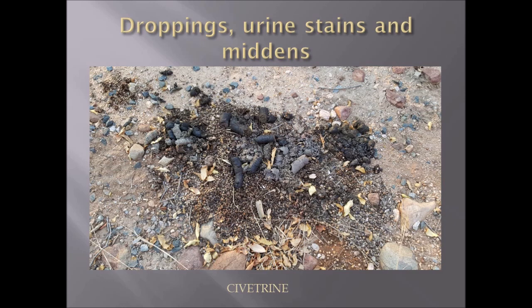Here we have a civet midden. Civets have these large middens which are used to mark their territory. They have the largest anal glands, which produce really large droppings. Their droppings also contain a lot of seeds since civets are omnivores — they feed on seeds, fruits, insects, millipedes, which they love to eat, and sometimes small bones of animals they may have fed on.